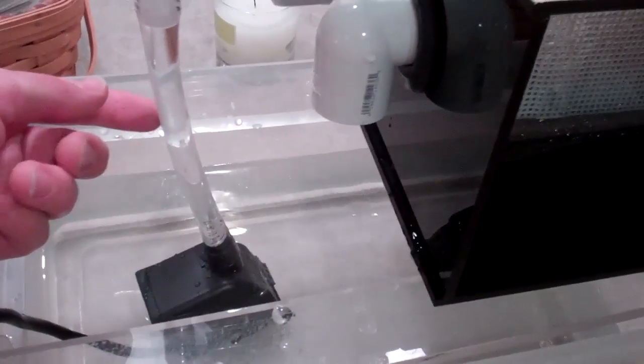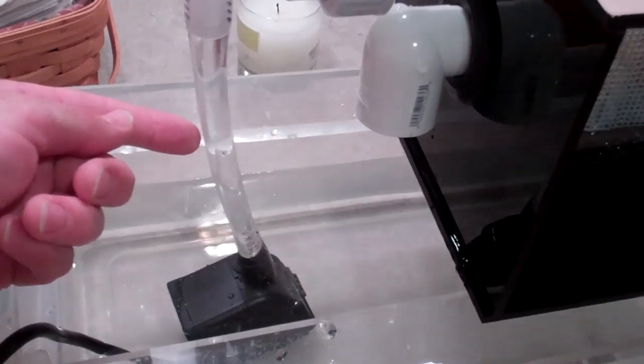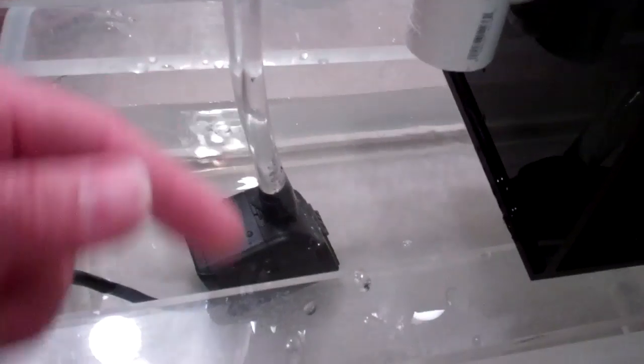So this is just a five-eighths inch inner diameter, three-quarter inch outer diameter vinyl tubing from Lowe's. It actually lists that it's for aquarium use at Lowe's, the Lowe's I have.